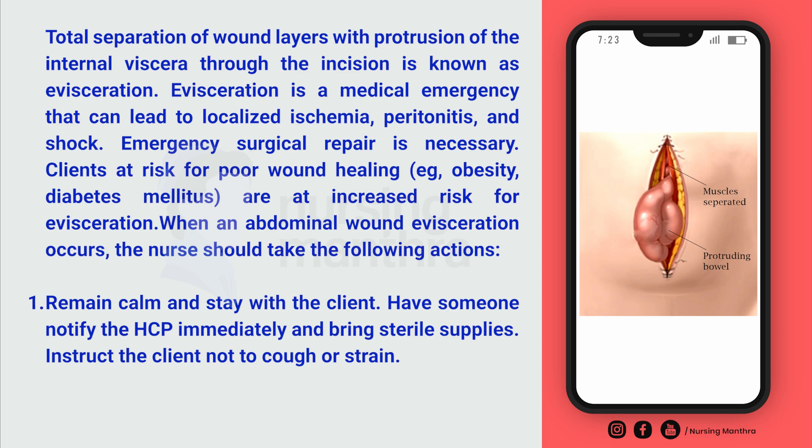This question is mainly about wound evisceration. Wound evisceration is the total separation of wound layers with protrusion of internal viscera through the incision. Internal viscera — such as a part of a bowel loop — comes outside after abdominal surgery. You can see this in the picture shown, where part of a bowel loop is protruding outside through the incisional wall.